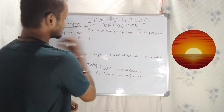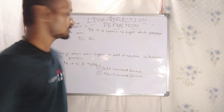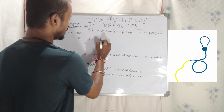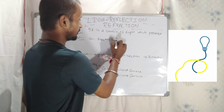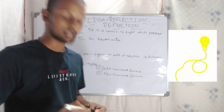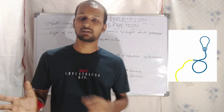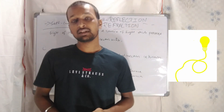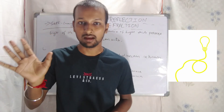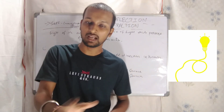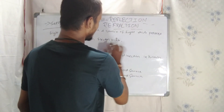A self-luminous source is a source of light which possesses light of its own. Examples include the sun and the electric bulb. These are self-luminous sources because they emit their own light.